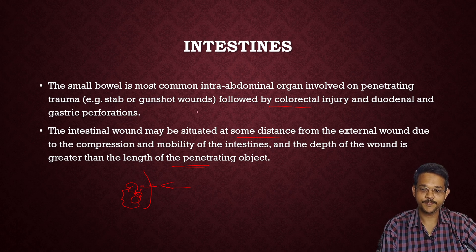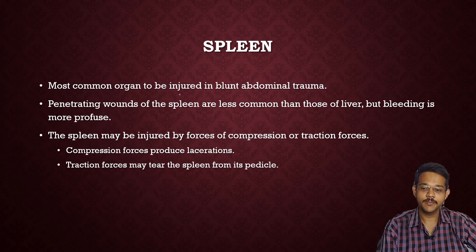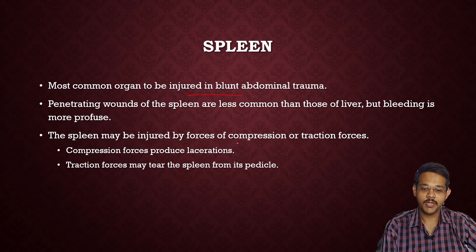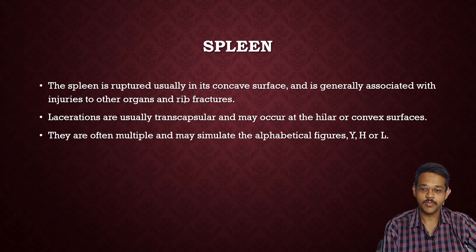The spleen is the most common organ to be injured in blunt abdominal trauma. It is a very fragile and easily ruptured organ. Penetrating wounds of the spleen are less common than those of the liver, but bleeding is more profuse in the spleen. The spleen may be injured by either compression forces, producing mainly lacerations, or traction forces, which produce mainly tearing of the spleen from its vessels. The spleen is usually ruptured on its concave surfaces, mainly the upper surface, and is generally associated with injury to other organs and rib fractures.